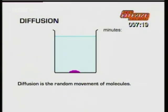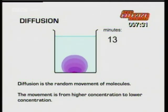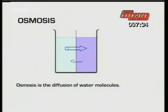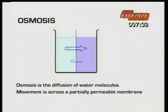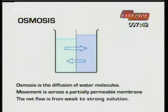Diffusion is the random movement of molecules of a substance, and the net movement of molecules is from a higher concentration to a lower concentration. Osmosis is the diffusion of water molecules — during osmosis, water molecules move randomly across a partially permeable membrane, and the net flow of water is from a weak solution to a strong solution. Remember, osmosis only applies to the movement of water molecules.